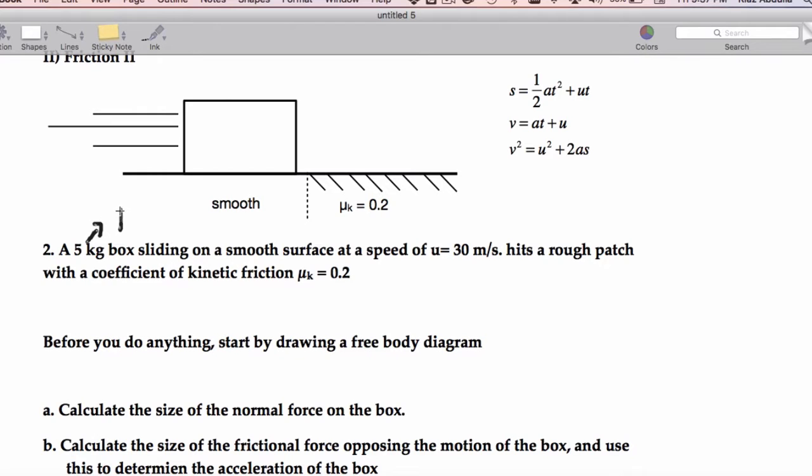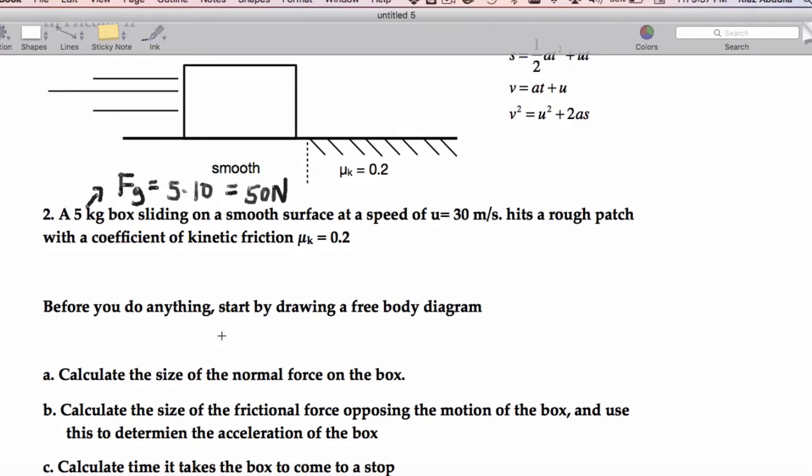We've got a five kilogram block. Let's go ahead and get its weight. That's going to be five times 10, which is going to be 50 Newtons. And we've got a coefficient of kinetic friction equal to 0.2.